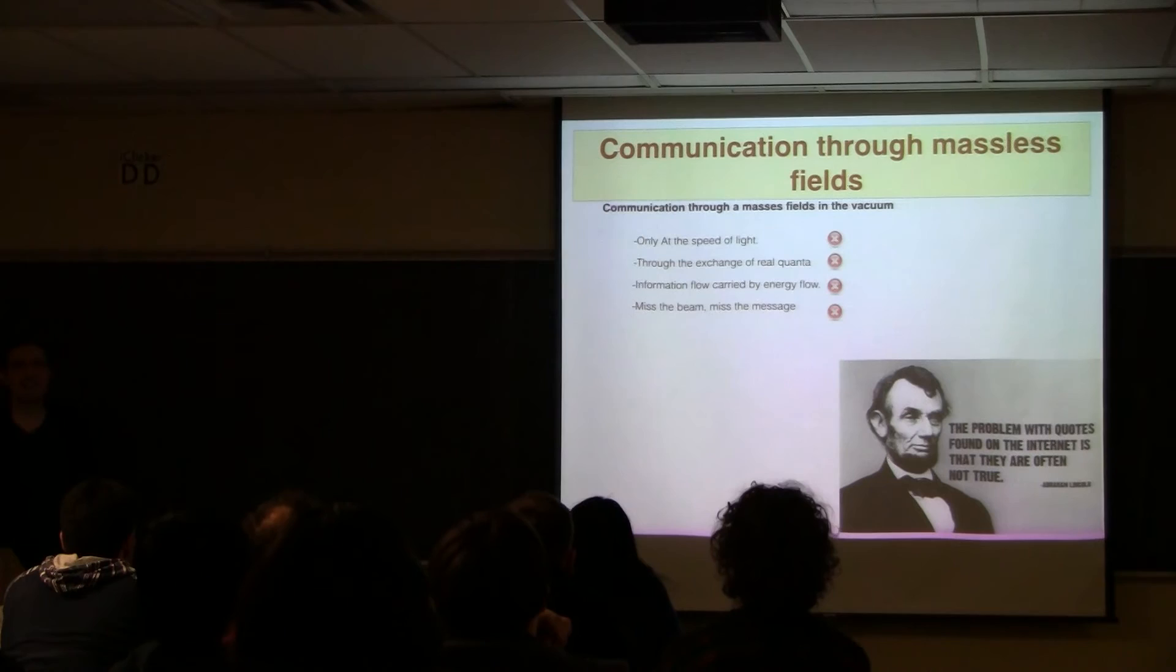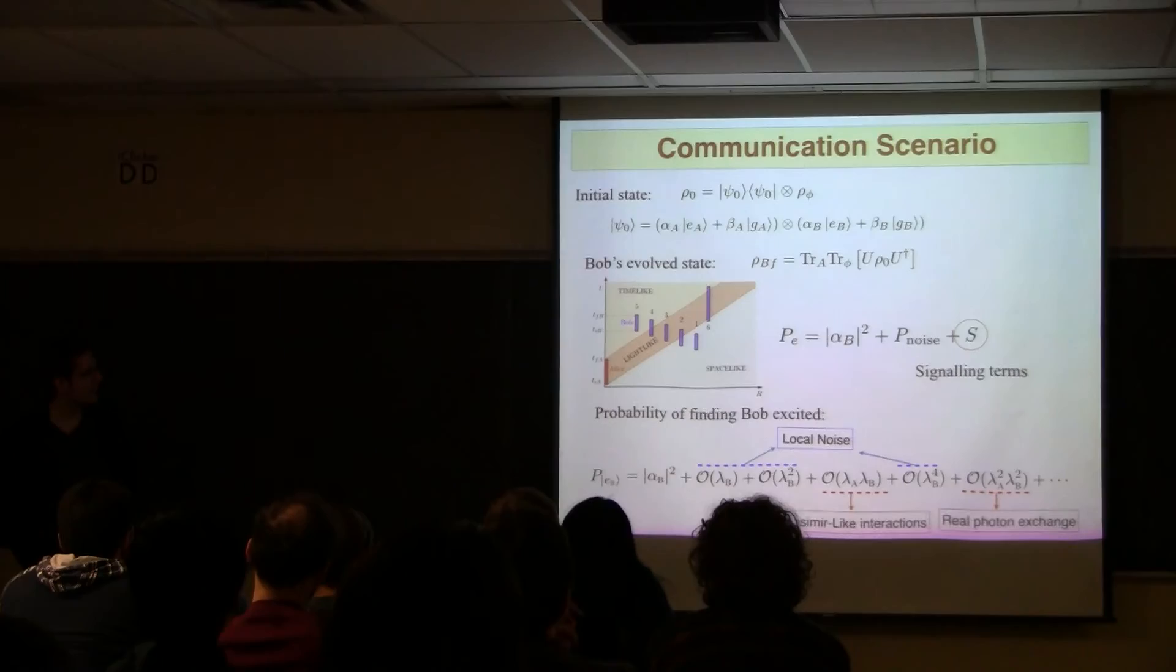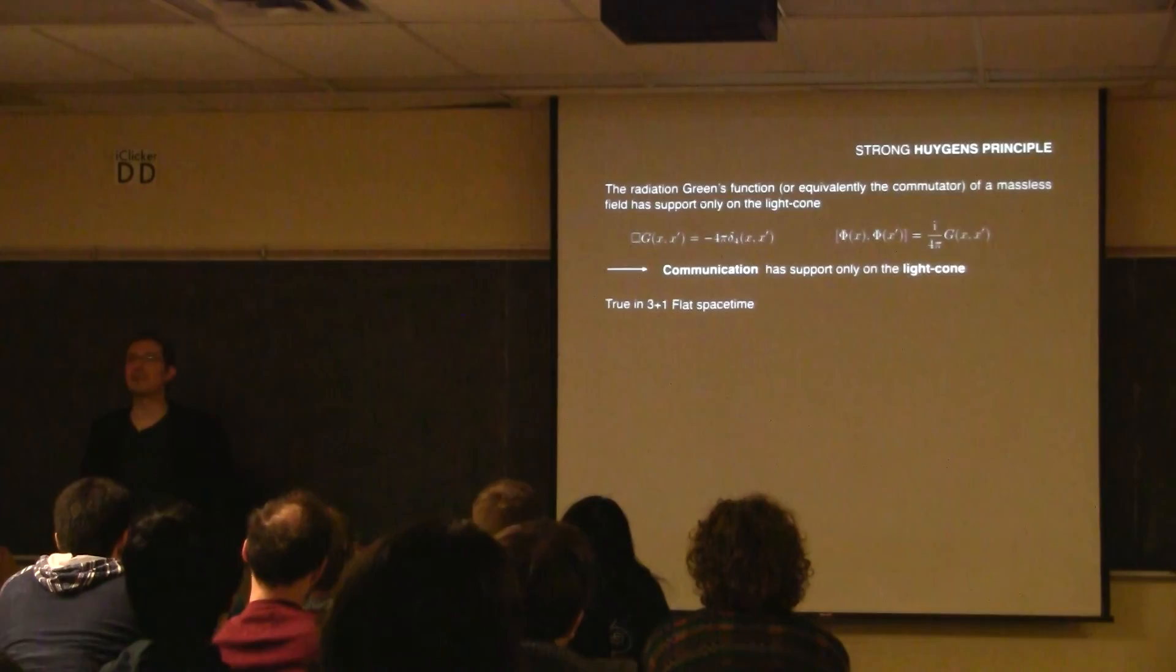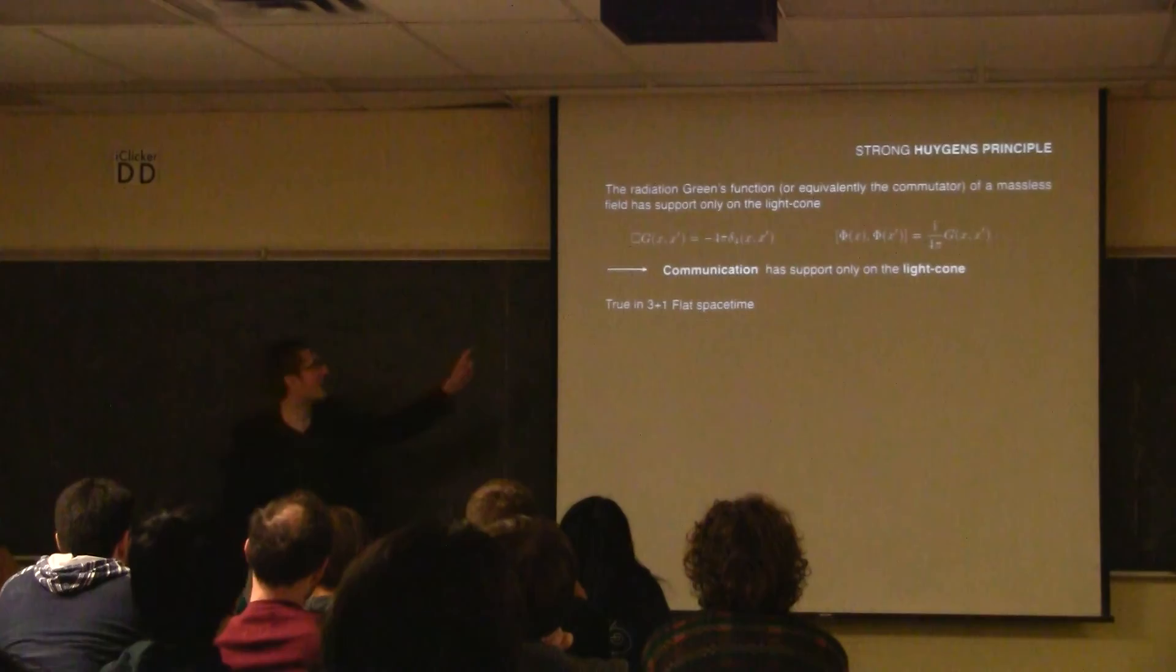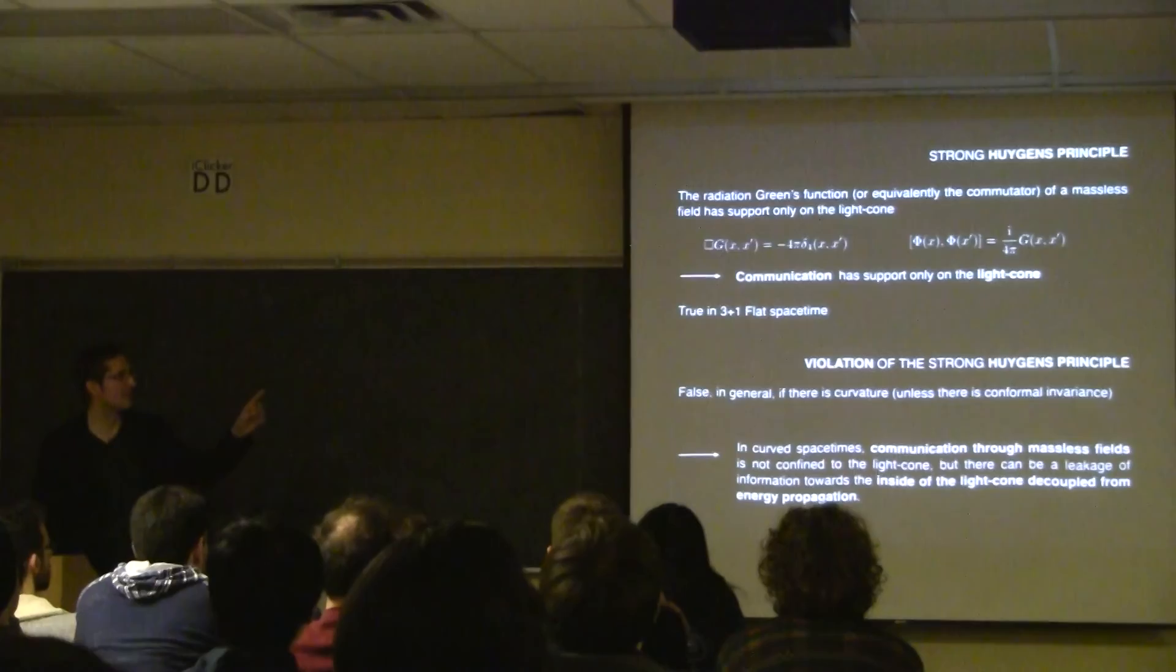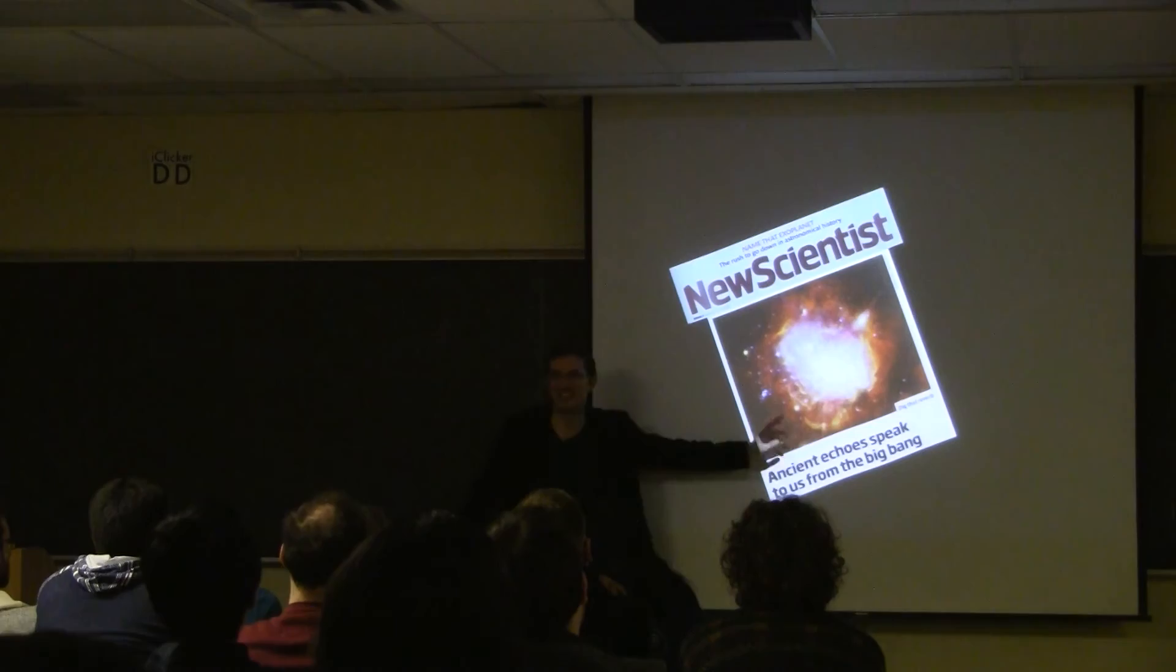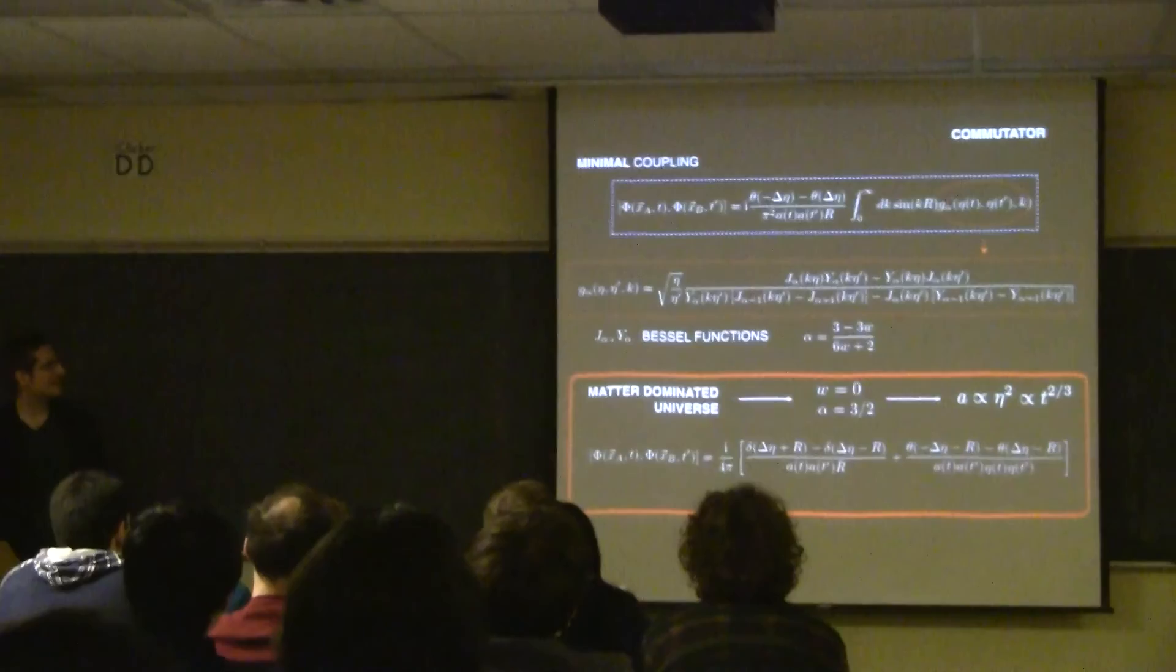So. Under some circumstances. That are relevant. We can actually prove. You know that. All those restrictions. Only at the speed of light. Through the exchange of real quanta. Carried by energy. And if you miss the beam. You miss the message. That's actually not true. So. In fact. Not true in general. In fact. If you. Use. Quantum antennas. You can actually have. Time like communication. With massless fields. So I'm not going to get into the technical details. Because. I'm running out of time. But let me just show you. In particular. In cosmology. In three plus one flat space time. You cannot do it. But. In any dimensional space. With. Even number of dimensions. Of course. Space. And also. In most curved space. For example. The one we live in. Cosmological curved space. You can actually get. Time like signaling. Through something called. The violations of the. Strong Huygens principle.